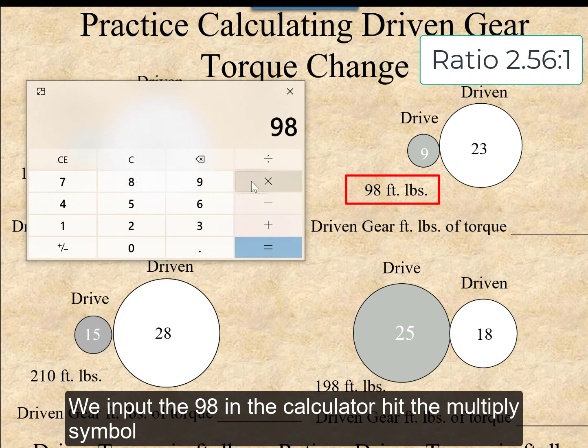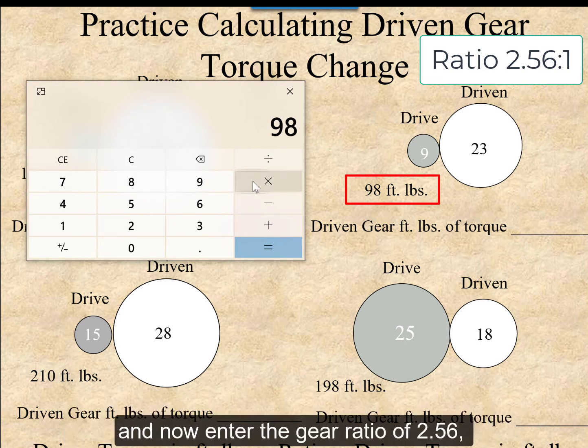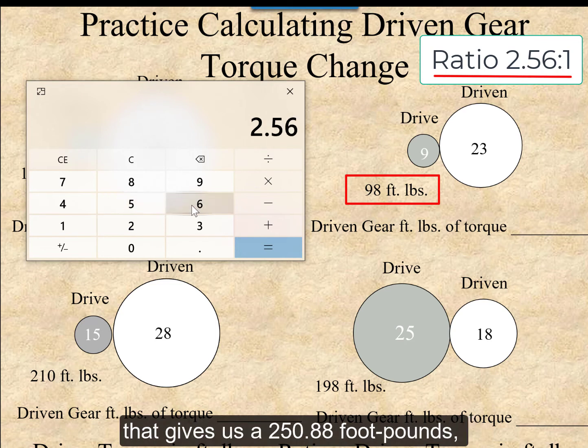hit the multiply symbol, and now enter the gear ratio of 2.56. That gives us 250.88 foot-pounds.